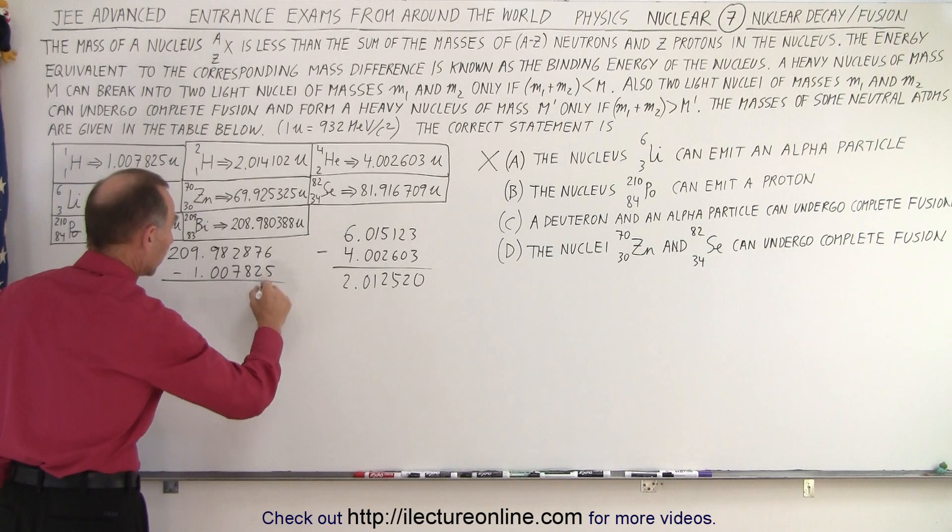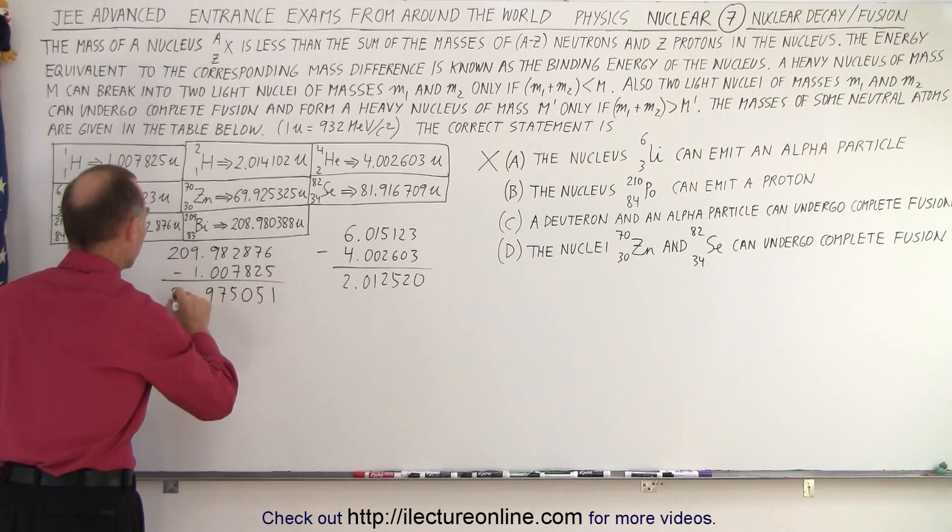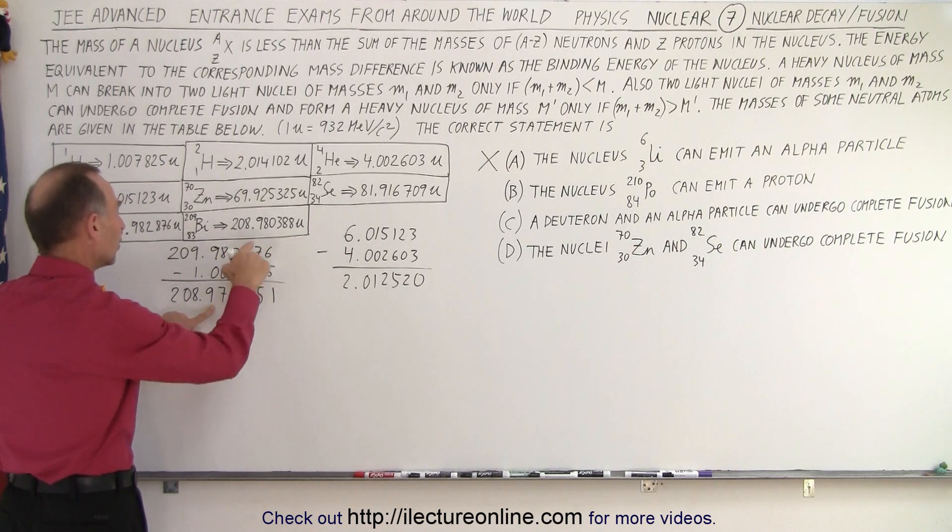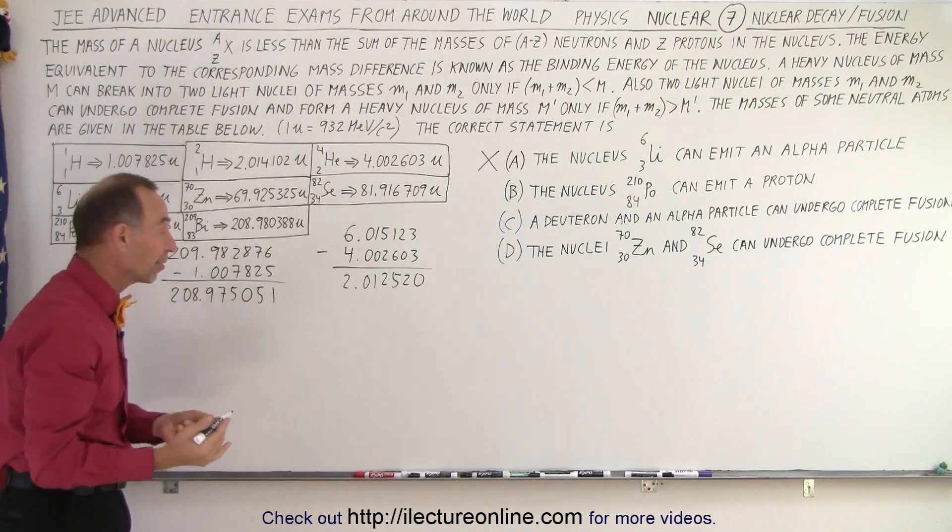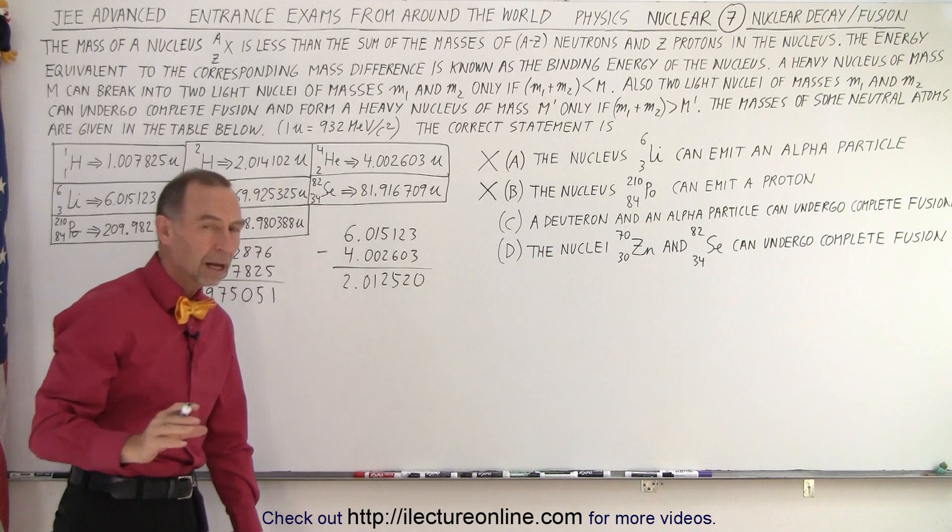All right, so that would be 208.975051. So that's the remaining mass. And is that enough to make a bismuth? And notice, no, it's too small. It's not big enough. A bismuth could not be made from that. So it's again, a reaction that's not possible.